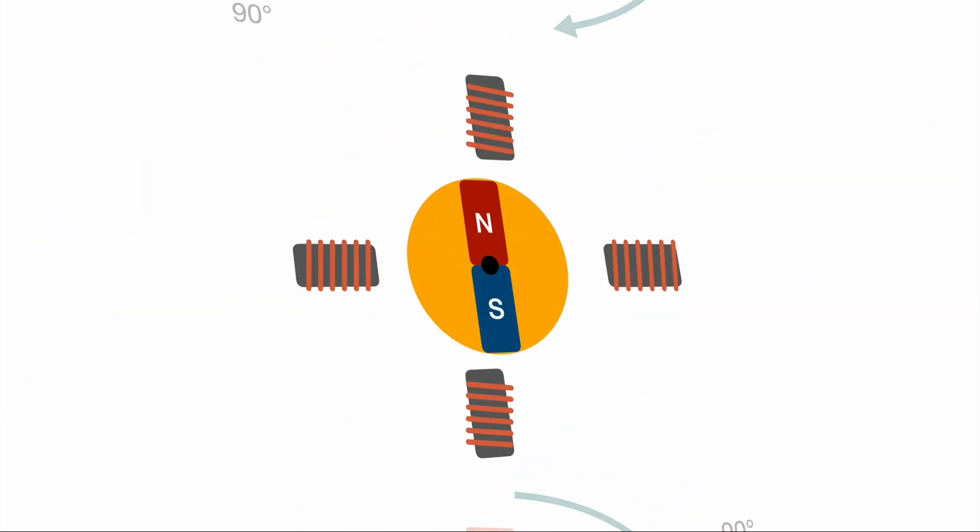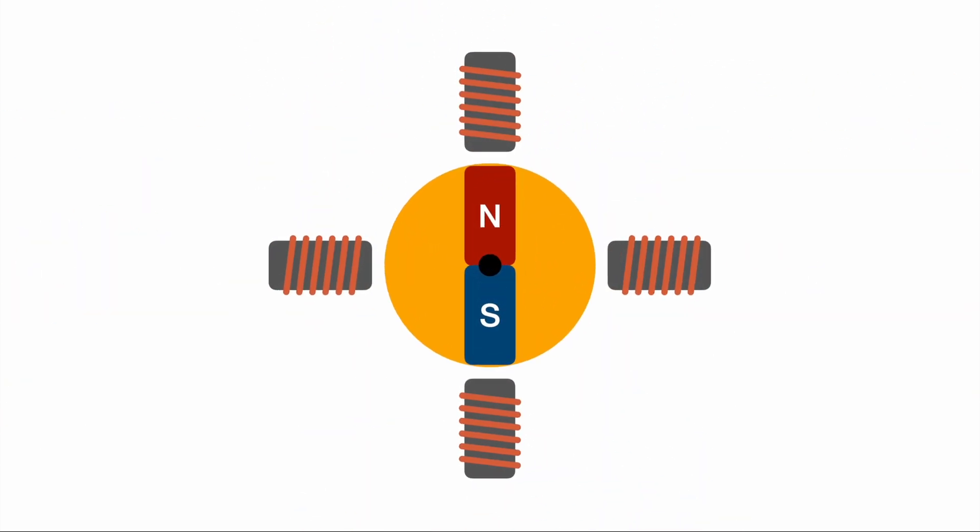Moving on to the half step control, we have basically the very same hardware setup but we have a bit more sophisticated ways to control the solenoids. Starting with the fixed position at zero degree again, we have the south pole at the top solenoid and the north pole at the bottom solenoid.